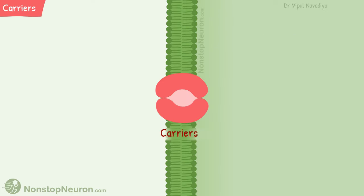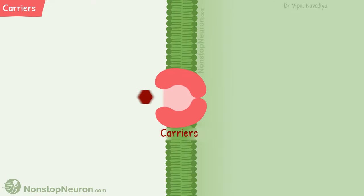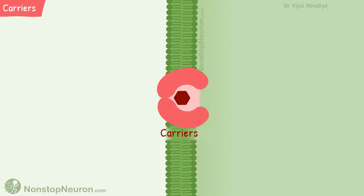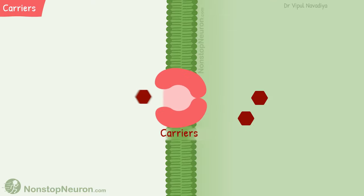Now let's talk about carriers. They never provide continuous passage. They have at least two gates, and both never open at the same time. They first open at one side, bind with the molecule they transport, close from that side, open on the other side, and release the molecule on that side.